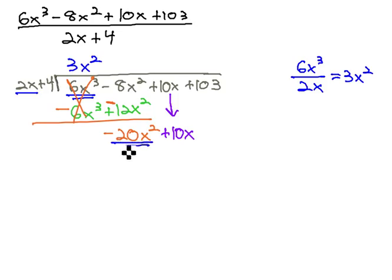Again, we'll take the front terms and divide them. Negative 20x squared divided by the 2x, and when we reduce this, we get negative 10x. This is our quotient, negative 10x.